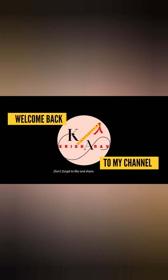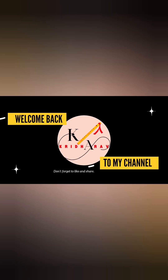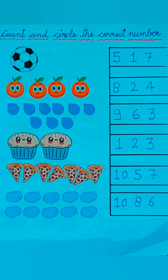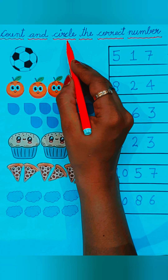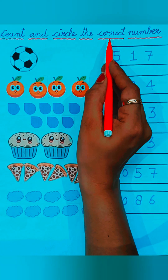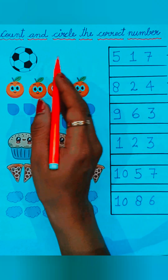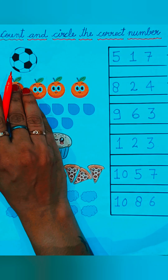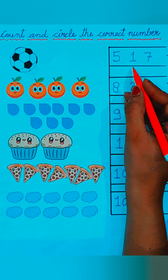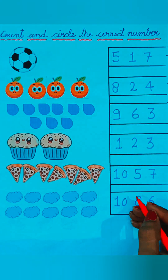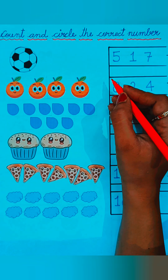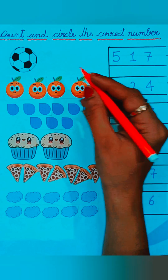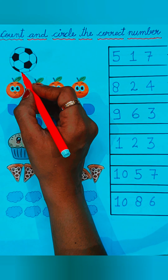Hello kids, welcome back to my YouTube channel. Today we will learn count and circle the correct number. We have to count the pictures and circle the correct number. Pictures are given at the left side and their numbers are given at the right side. We have to circle the correct number.